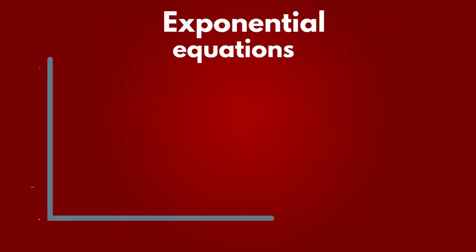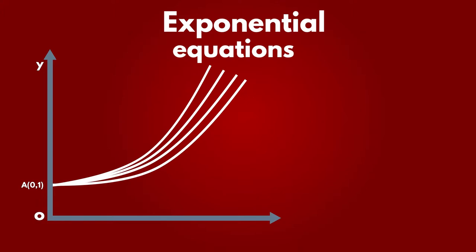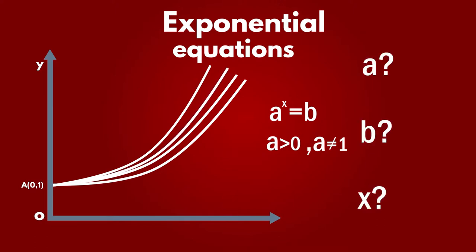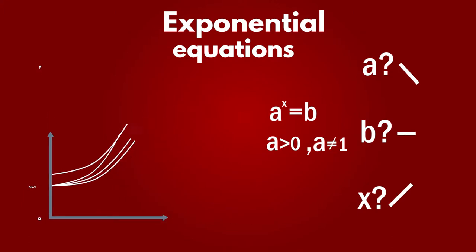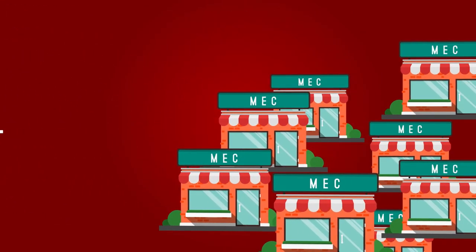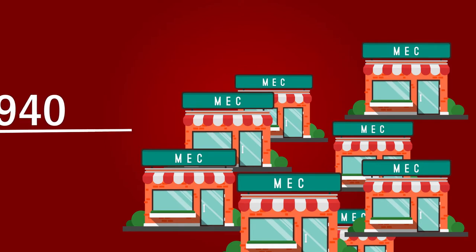One of the forms that an exponential equation can take is a raised to the x is equal to b, where a is greater than 0 and different than 1. What does a, b and x mean and how can they help you develop your dream empire?